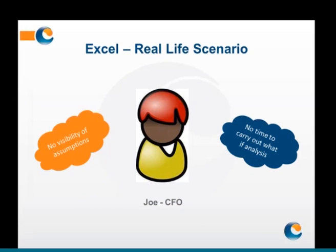Joe, the CFO, receives the final forecast from Jane the evening before he needs to present it to the board. Joe's FP&A team have been tied up consolidating the regional forecast and he has not had the resources to carry out any what-if analysis scenarios. He's just going to have to present the figures he has. On the day of the presentation, the board have a number of questions and Joe struggles to answer them as he does not have visibility of the underlying assumptions made by the regional managers. He cannot determine how the forecast totals were arrived at, so he has to park these questions and commit to providing more detail at a later date. As you can see, at different levels of the organization there are different issues when using Excel through the forecasting process.